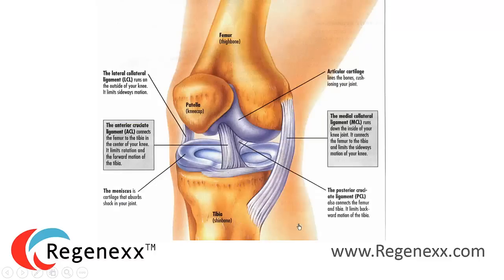This is what a knee looks like. The major structures include the femur bone up top, cartilage on the end of the femur bone, and on the top of the tibia bone. We have the knee meniscus, which acts as a shock absorber, the middle ligaments — the ACL and PCL — then the side ligaments, and then the kneecap or patella. Those are the major structures we'll look at today.